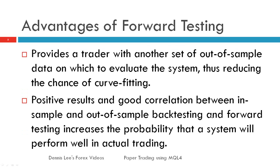Despite the disadvantages of forward testing, performing only backtesting on your strategy is not sufficient and it is incomplete. This is because over-optimization of parameters during backtesting can lead to curve fitting, which leads to unprofitable systems because the results are essentially custom fitted for only that particular data and time period. Hence, forward testing provides a trader with another set of out-of-sample data on which to evaluate the system, thus reducing the chance of curve fitting. Positive results and good correlation between in-sample and out-of-sample backtesting and forward testing increases the probability that the system will perform well in actual trading.